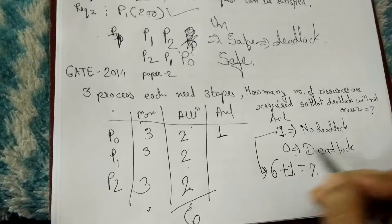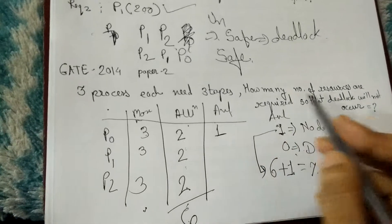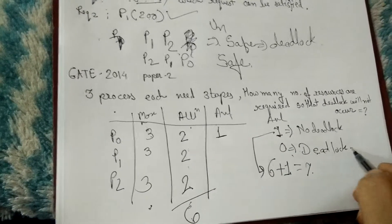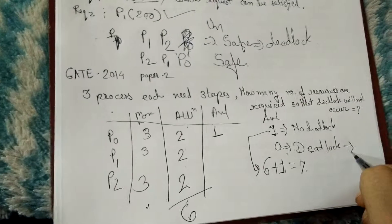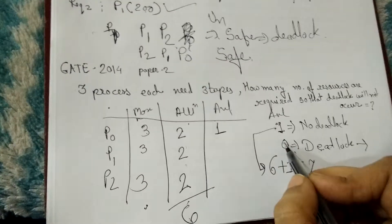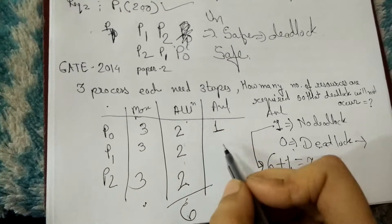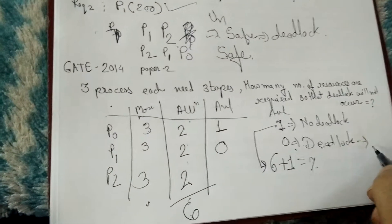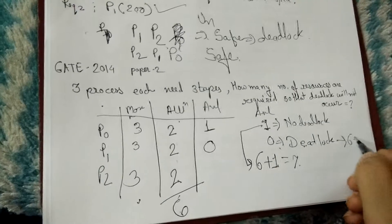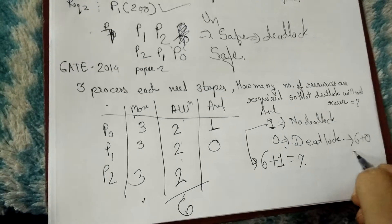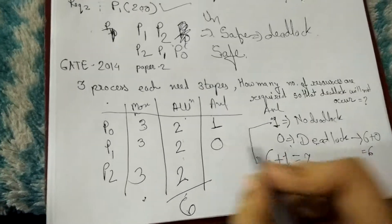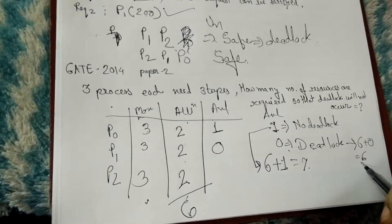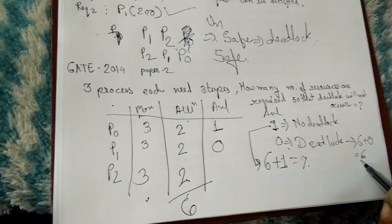If the question asks when deadlock will occur, available = 0, so total resources = 6 + 0 = 6. With 6 resources, deadlock will happen.